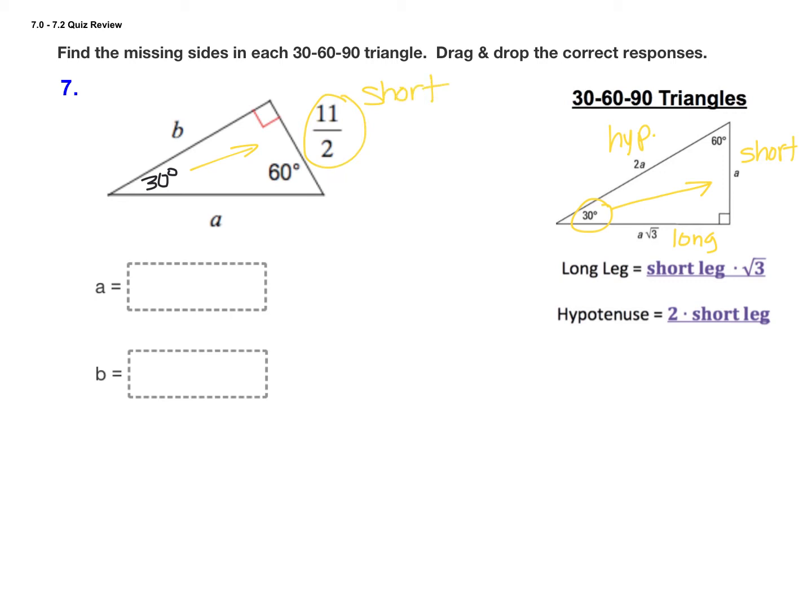We should be able to use that short leg to find the length of the long leg and the hypotenuse. Let's start with the hypotenuse. Remember that the hypotenuse is just twice the short leg. Here, a equals 2 times 11 over 2. When we multiply, 2 times 11 is 22, and 22 divided by 2 is 11. So the hypotenuse a must be 11.